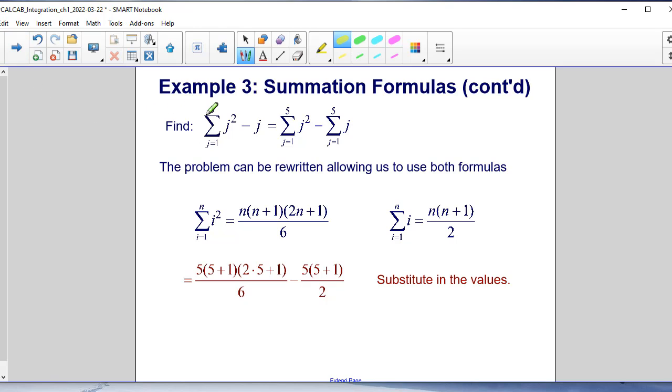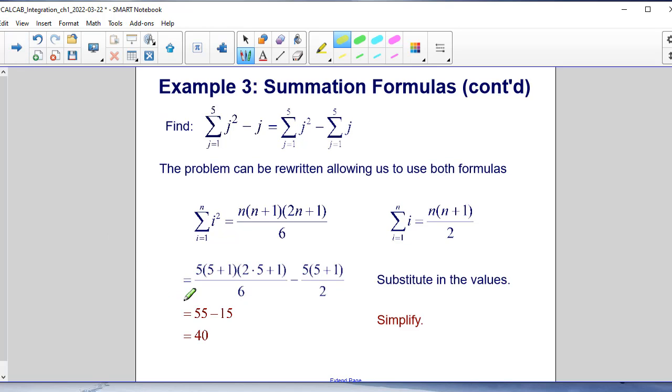So we're going to put 5 in for n here, so we're going to have 5 times 5 plus 1 and so on, minus 5 times 5 plus 1 divided by 2. We substitute the given values, which ultimately gives us 55 minus 15, which is equal to 40.